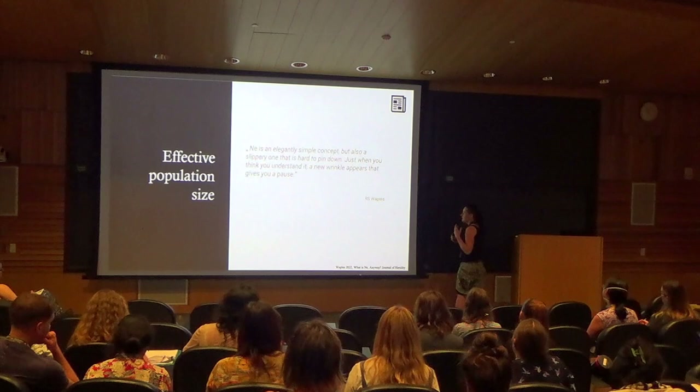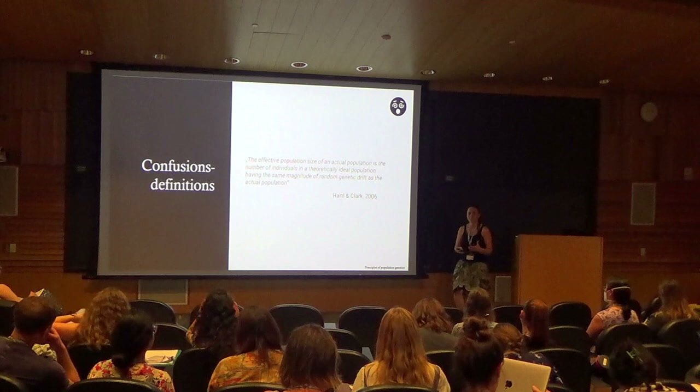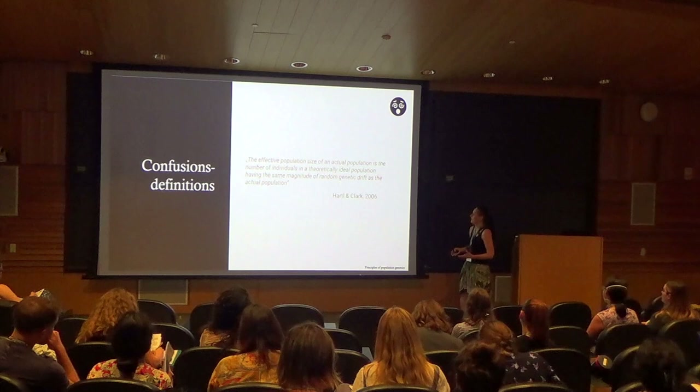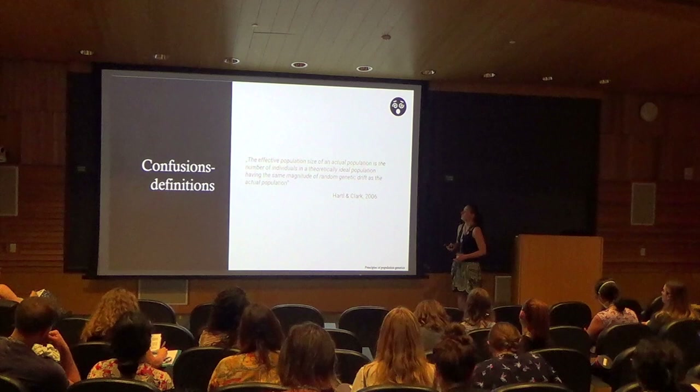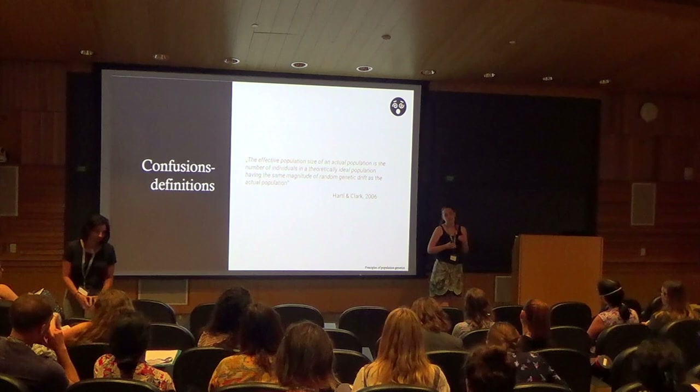So why is it so? The first confusion comes with the diversity of definitions. Here is the definition that probably most of you recognize from the principles of population genetics textbooks: the effective population size of an actual population is the number of individuals in a theoretically ideal population having the same magnitude of random genetic drift as the actual population. This is exactly the definition where you can understand each word, but still, if you want to describe what it actually means, it can give you trouble.